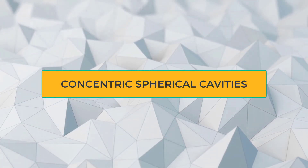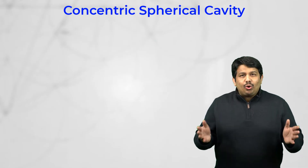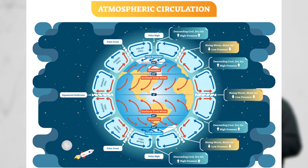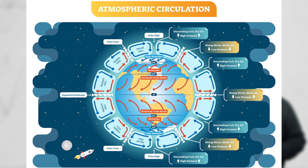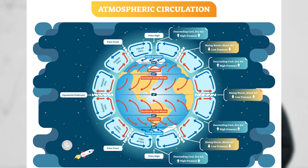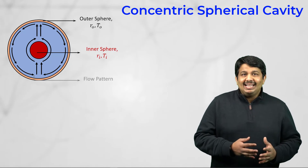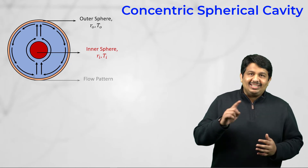Moving on to the last part of the lesson: the concentric spherical enclosure. The motion of hot and cold parcels of air from and to the Earth's surface respectively in the planetary circulation is a good example of natural convection in a concentric spherical enclosure. This motion leads to the formation of convection cells in the atmosphere around our planet.